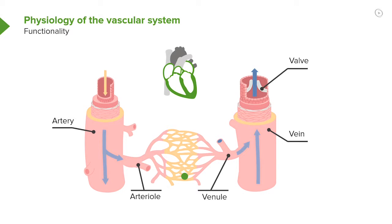Notice how thin-walled the capillaries are, so that only one red blood cell at a time can get through. This small size allows the red blood cells to release their oxygen and to pick up carbon dioxide, a waste product from the cells.